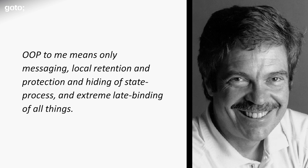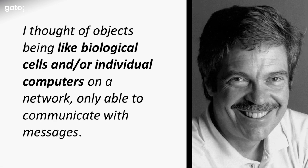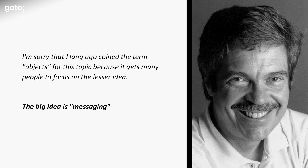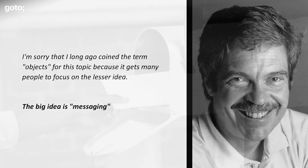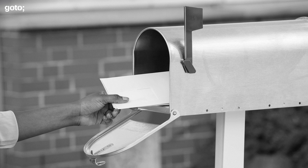To Kay, the most important part of all of this was the idea of sending messages. He said, 'I thought of objects being like biological cells or individual computers on a network, only able to communicate with messages.' In fact, he even said he regretted calling it object-oriented, because that put the emphasis in the wrong place. This was a clarifying conception of object orientation. Once I understood it, I did my best to apply and teach OO in terms of objects sending messages to each other. But the more I did, the more something felt off. Let's compare sending a message in the mail to sending a message in a typical OO language.